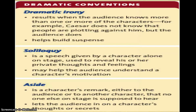Now let's look at the other dramatic conventions Shakespeare employed in his tragedies. To create suspense before the inevitable outcome and to help the audience understand the characters, Shakespeare used certain dramatic conventions: the soliloquy, the aside, and dramatic irony. Dramatic irony results when the audience knows more than one or more of the characters. For example, in the tragedy of Julius Caesar, Caesar does not know that people are plotting against him, but the audience does. By employing dramatic irony, Shakespeare is able to create a sense of suspense.